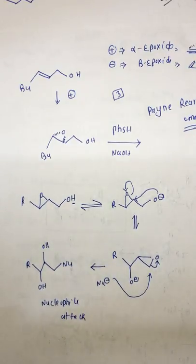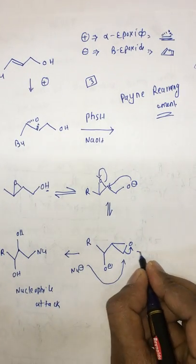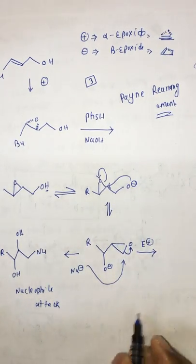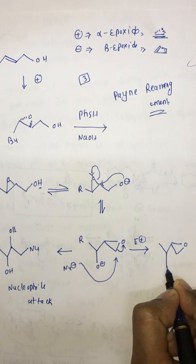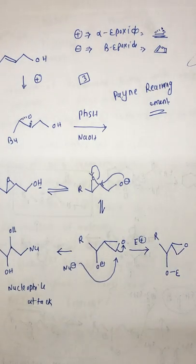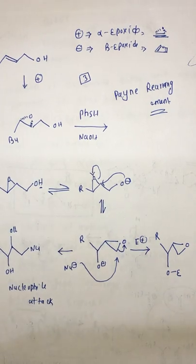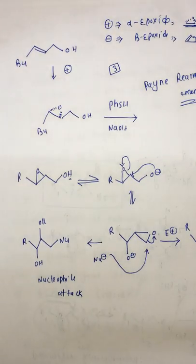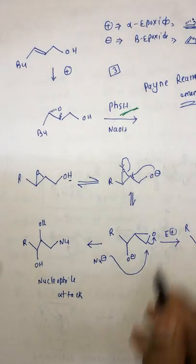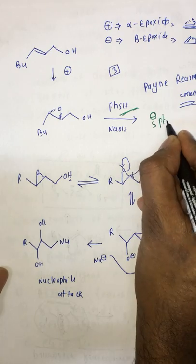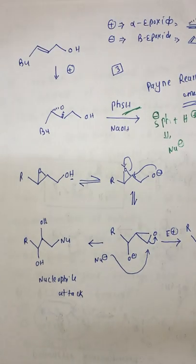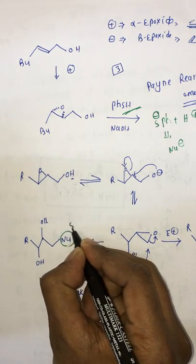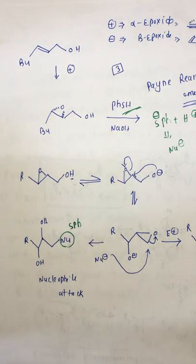If it is an electrophile attack, the product will be different because in electrophile attack, the electrophile attaches to the oxygen. In this case we have PhSH, so PhS minus plus H plus — this is the nucleophile. Let's compare: the product should have SPh.